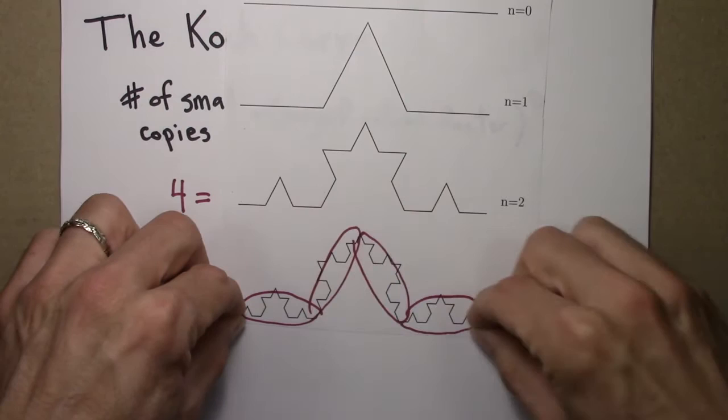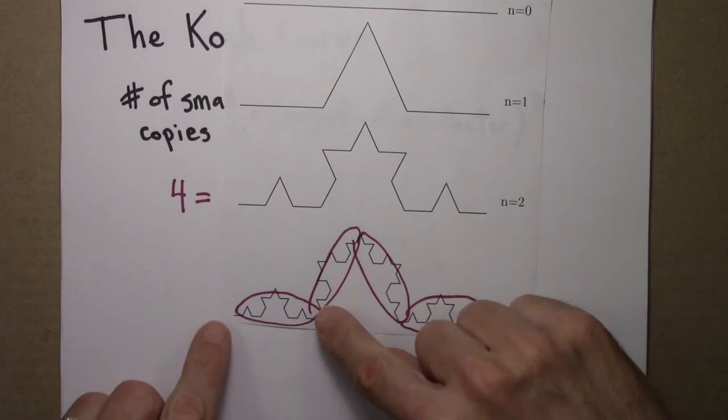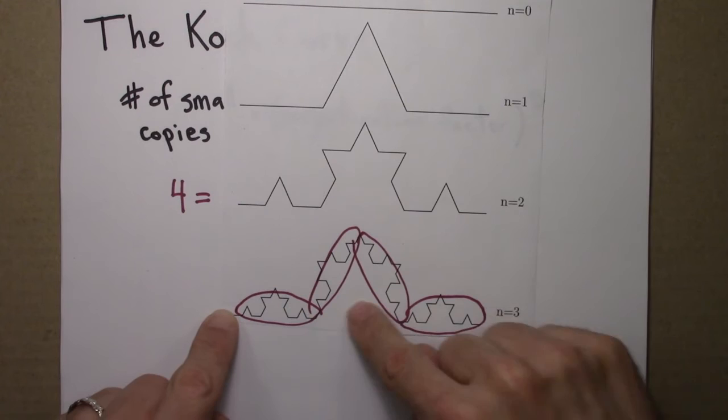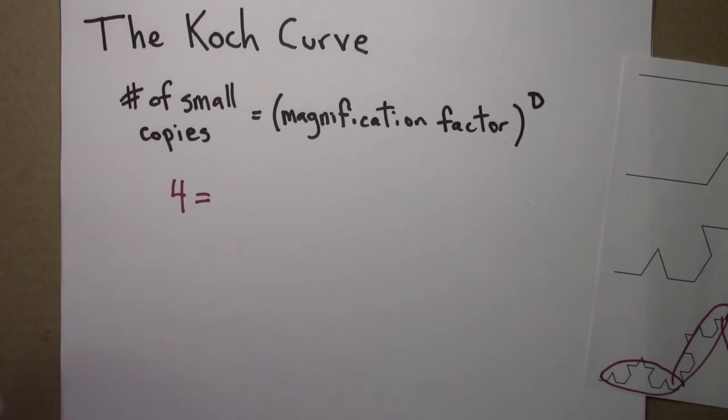And that's true for all these shapes. This piece, I would need to pick it up, move it here, and then stretch it three times to have it be the same length. You can see also, one, two, three. So again, we'll have to stretch it by three. So the stretch factor, the magnification factor, is three.